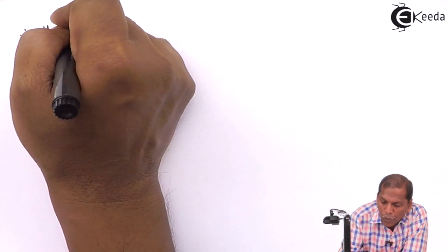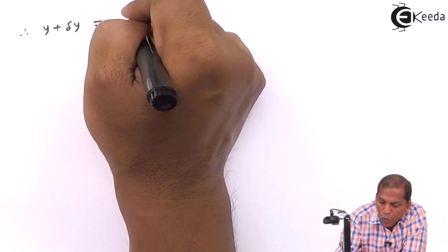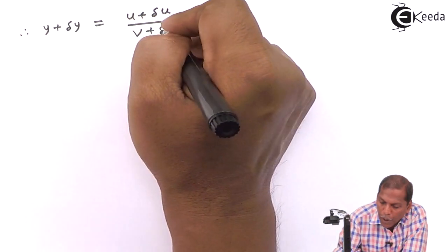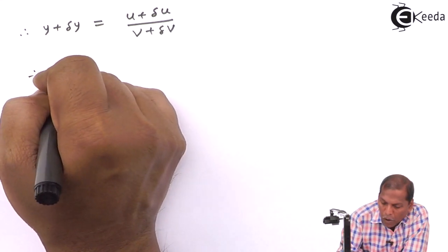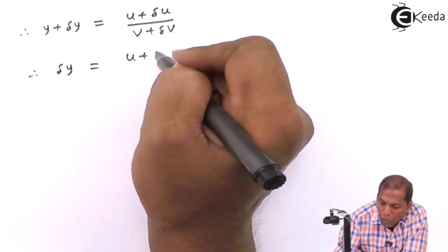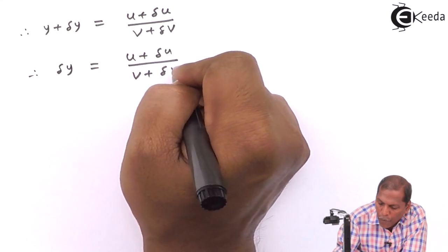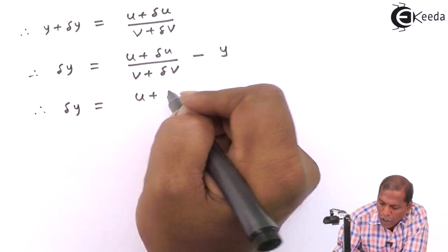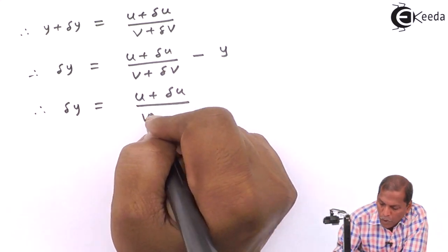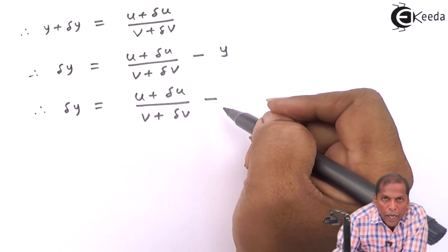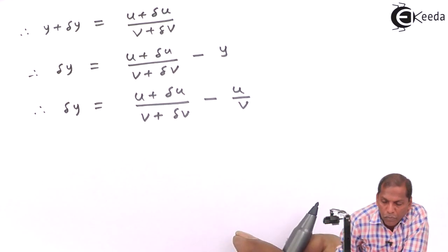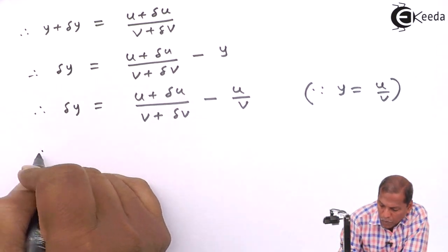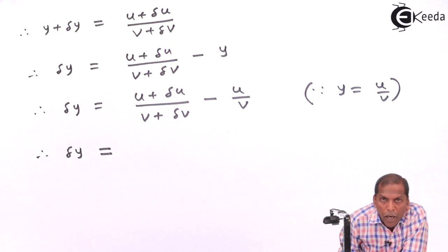therefore y changes to y plus delta y, which equals u changing to u plus delta u, and v changing to v plus delta v. Therefore, delta y is equal to (u plus delta u) upon (v plus delta v) minus y. Since y is equal to u upon v,